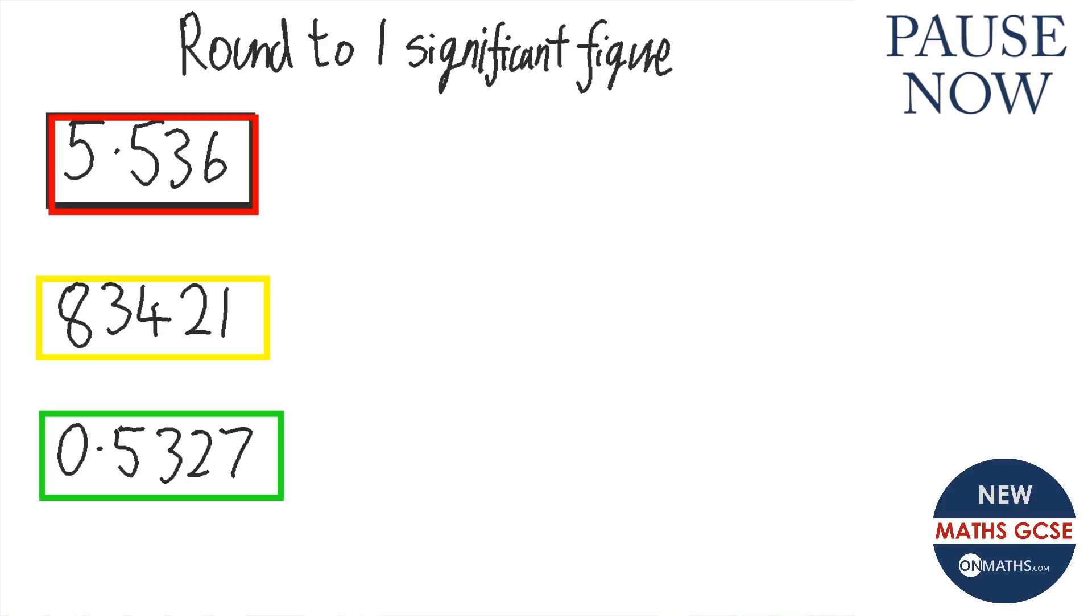Okay now have a go yourself. Okay so for the first question, this 5 here is the first number and the 5 there is the one that decides whether that stays the same or goes up by 1. Because this number is a 5, that other 5 goes up by 1. So the answer is 6.